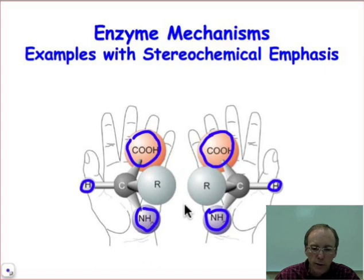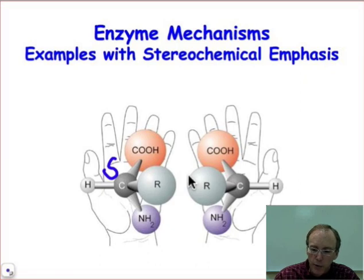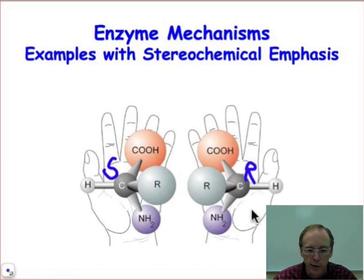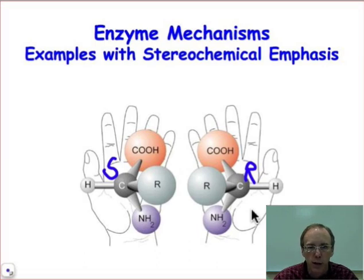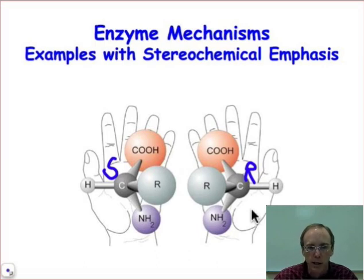But if you were to take this S enantiomer and move it into the opposite hand — it's now in the left hand — what you would find is you'd no longer be able to line all of those groups up in the way that they are. The carboxylic acid, the amino group, and the hydrogen could not be recognized by the fingers, palm, and thumb as they are here.